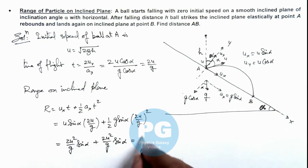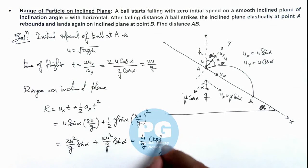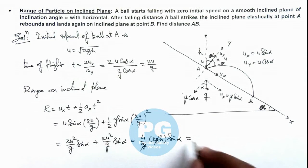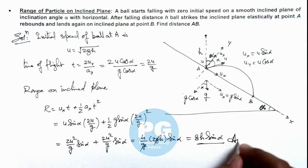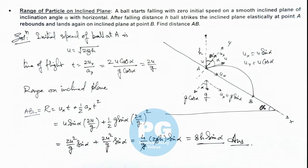u squared. u is root 2gh, so this can be written as 2gh multiplied by sine alpha. Here g gets cancelled out. The final result we are getting is 8h sine alpha. This is the final result of the problem, or this is the distance AB which we are required to find in the given situation.